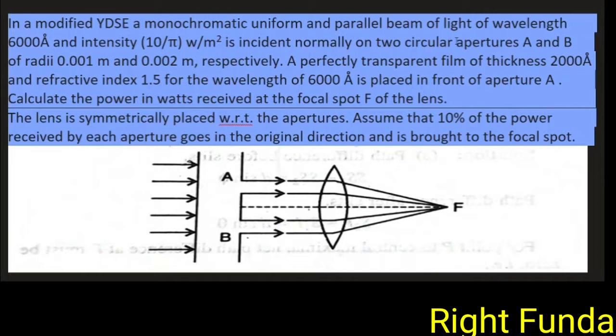A perfectly transparent film of thickness 2000 angstrom and refractive index 1.5 for wavelength 6000 angstrom is placed in front of aperture A. The lens is symmetrically placed with respect to the apertures. Assume that 10% of the power received by each aperture goes in the original direction and is brought to the focal length. The question is asking to calculate the power received at the focal point F of the lens.